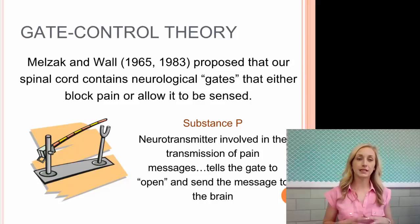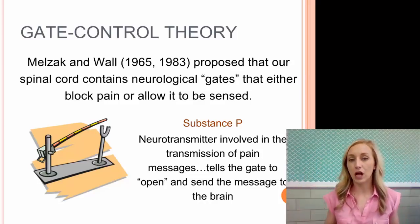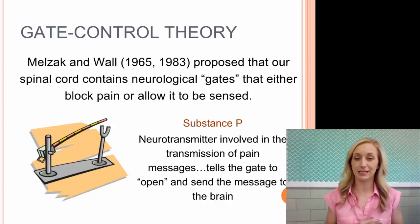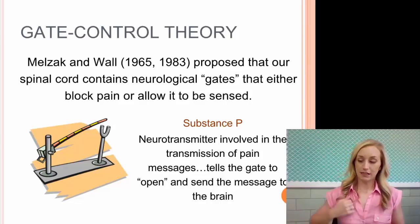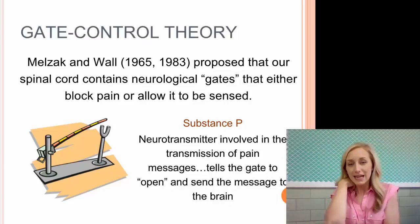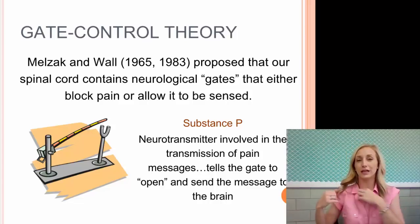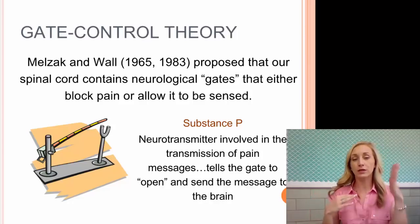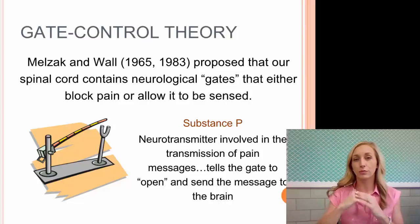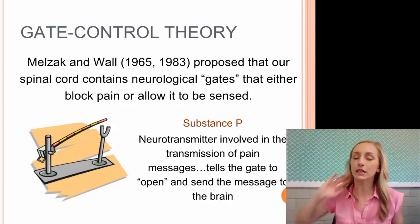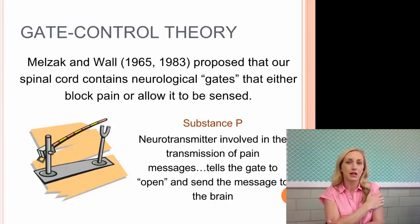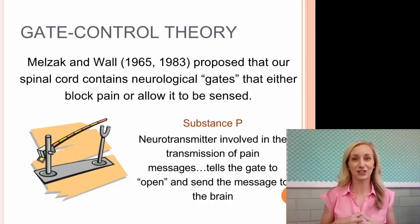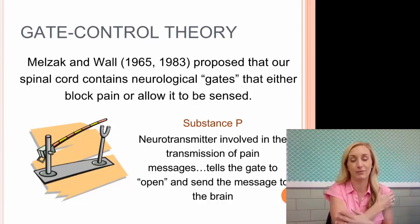The gate control theory proposes that the spinal cord contains neurological gates that either block pain or allow it to be sensed. Substance P is the neurotransmitter involved in transmitting pain messages — it tells the gates to open and send the message to the brain. Supporting this: if you knock your elbow and rub it, rubbing actually helps. The rubbing sensation sends new sensory messages to your spine, which opens gates to the rubbing sensation and closes the pain messages. Similarly, if you have a terrible toothache and a friend punches your arm, your tooth doesn't hurt anymore — because now you're focused on how bad the arm hurts.